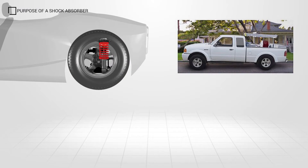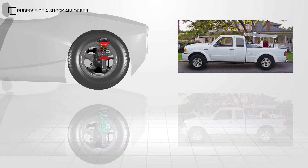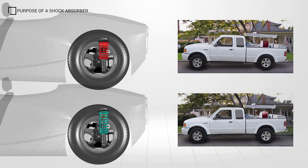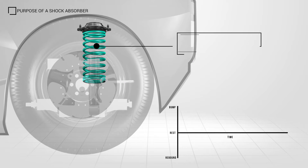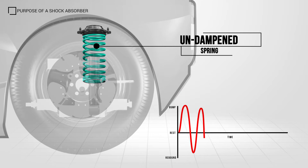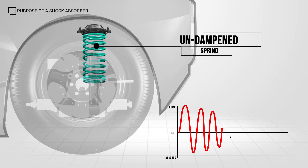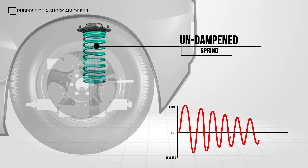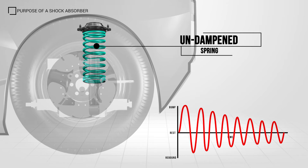When spring selection is being considered by OEMs, the spring type and rate will be chosen to match the required vehicle dynamics and load carrying capacity. An undampened spring may initially absorb road shocks, but it will then continue to compress and rebound many times until the spring energy is dissipated.